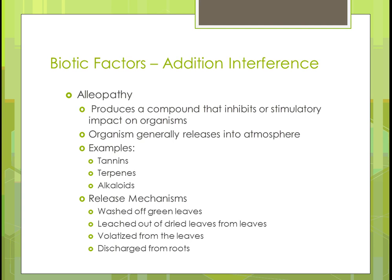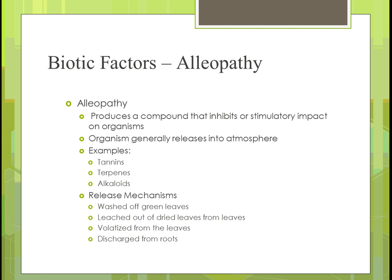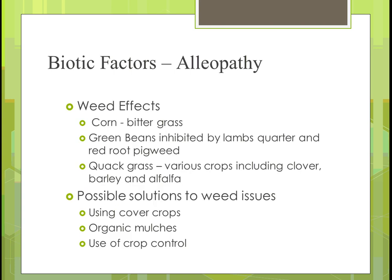When it's a release mechanism, it washes off the leaves, leaches out of dried leaves onto the soil, volatilizes from the leaves when it gets wet from rainwater, or it can be discharged from the roots in the case of some organisms. For weed effects, some of the weed effects for corn include bitter grass; green beans are inhibited by lamb's quarter and red root pigweed; and various crops including clover, barley, and alfalfa would be affected by quack grass.